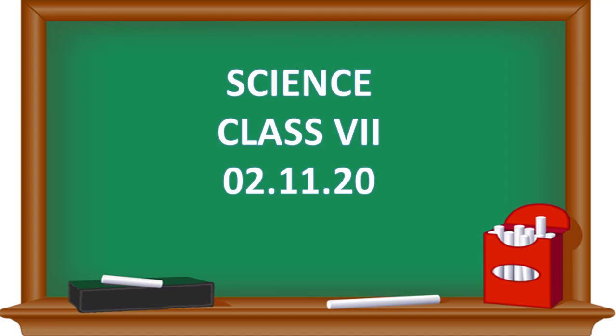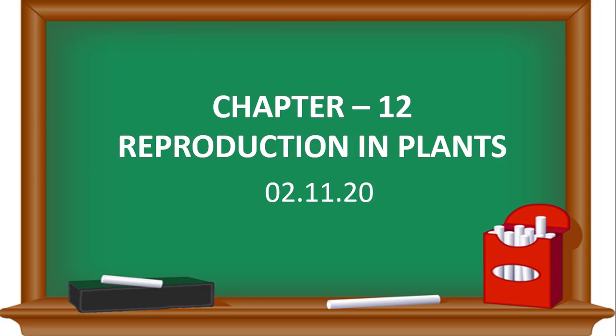Good morning, dear students. Welcome back to your science class. In our previous class, we started chapter 12: Reproduction in Plants, and studied introduction and vegetative propagation under asexual reproduction. Today we will study the remaining asexual modes of reproduction — budding, fragmentation, and spore formation — as well as sexual reproduction, fruit and seed formation, and seed dispersal.